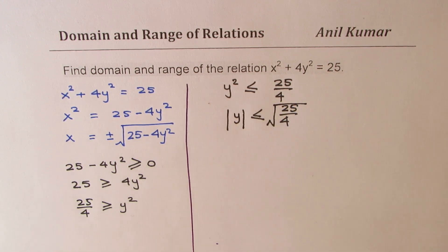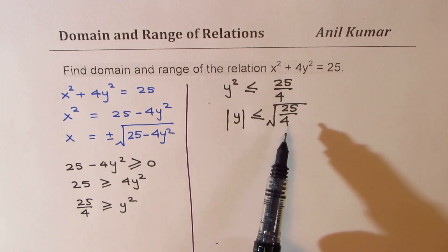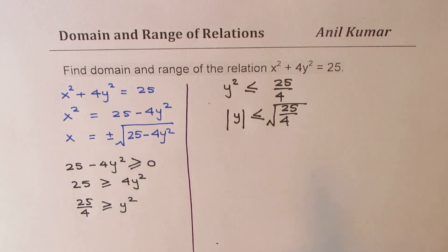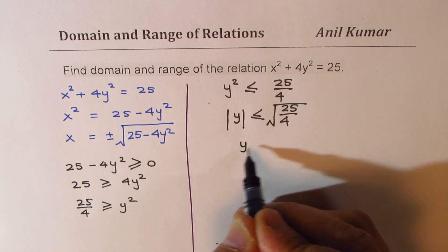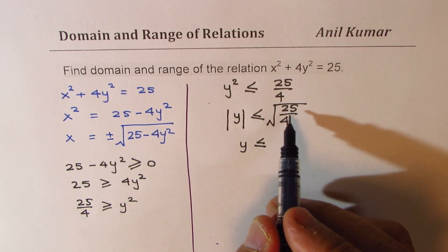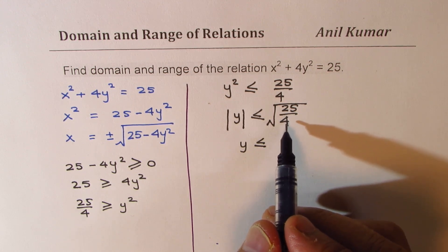And when you square root this, we get plus and minus. So that really means that the value of y is less than or equal to √(25/4) = 5/2.